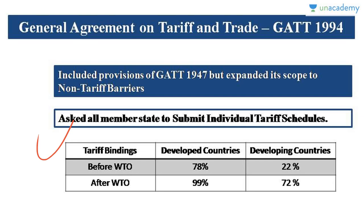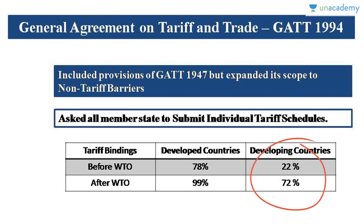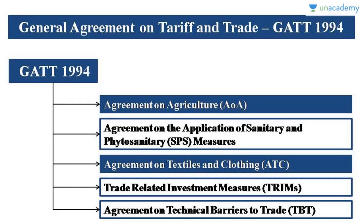When a country submits a tariff schedule and includes goods in it, those goods are called tariff bound — they are now under the watch of WTO. Before WTO, developed countries had 78% of their imports tariff bound; after WTO, this rose to 99%. For developing countries, the figure went from 22% to 72% — a huge advancement showing how effective GATT 1994 was.